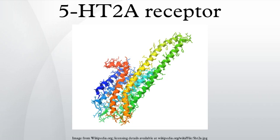Thus the 5-HT2 receptor family is composed of three separate molecular entities: the 5-HT2A, the 5-HT2B and the 5-HT2C receptors.